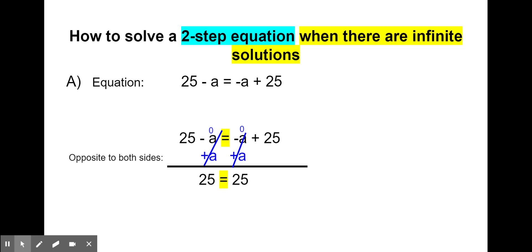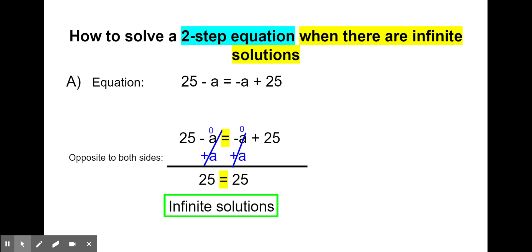Notice our a's canceled out, just like they did when we had a two-step equation with no solution. The variable terms are still eliminated, but now our statement is 25 equals 25. That means we have a number equal to the same number on the right side. When we did no-solution equations, we had a number not equal to a different number, but this time we have 25 equal to the same number 25 on the right. So this means that we have infinite solutions.